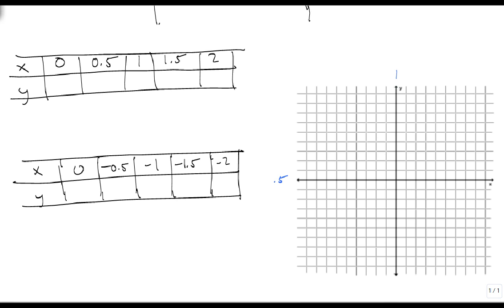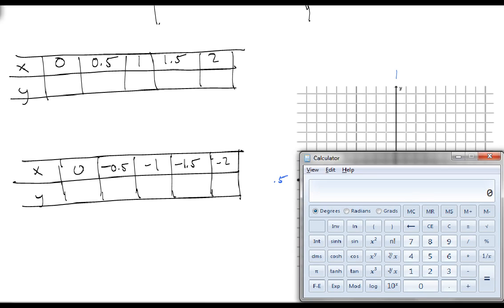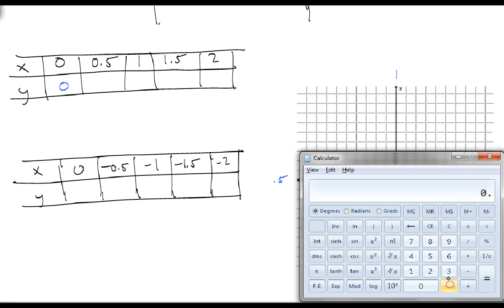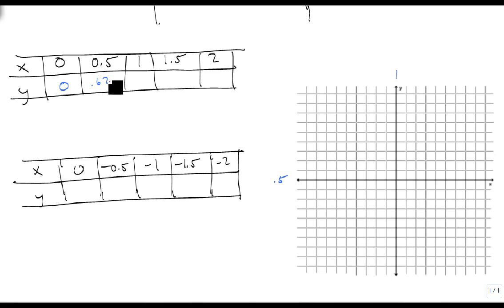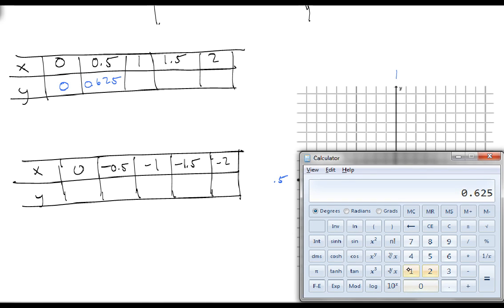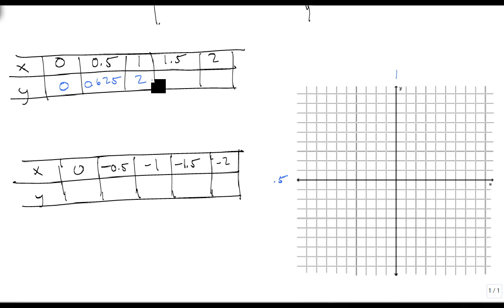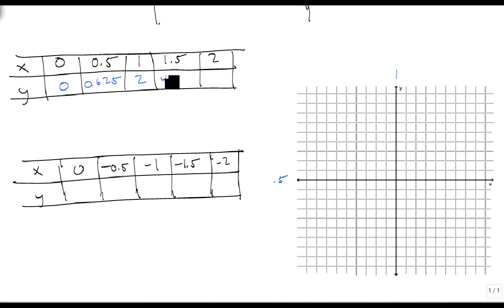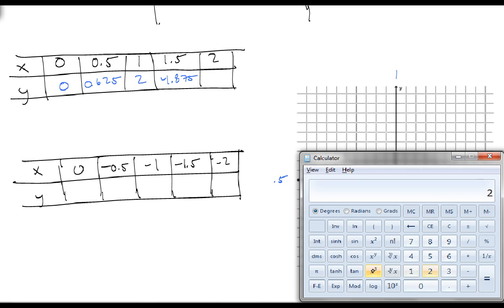So we take our x cubed plus x and we plug in 0. So we're going to get 0 cubed plus 0, which is 0. Do the same thing with 0.5: 0.5 cubed plus 0.5 is 0.625. 1 cubed plus 1 is 2. 1.5 cubed plus 1.5 is 4.875. And 2 cubed plus 2 is 10.